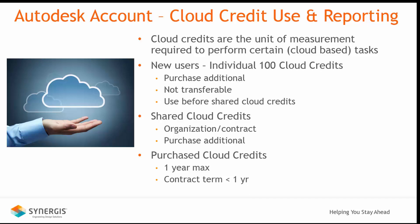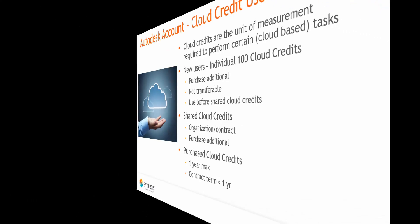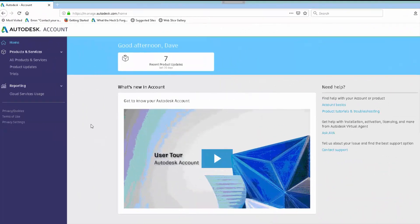Shared cloud credits are based on cloud credits assigned to an organization contract, subscription, or maintenance plan. A user who belongs to an organization with shared cloud credits must use their initial free individual cloud credits first. Any cloud credits purchased by the user or through an organization's subscription or maintenance plan must be used within one year of purchase. If the contract term is less than one year, purchased cloud credits will expire when the term does, and any unused purchased cloud credits cannot be carried over.